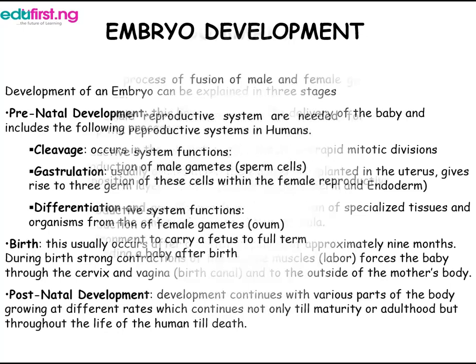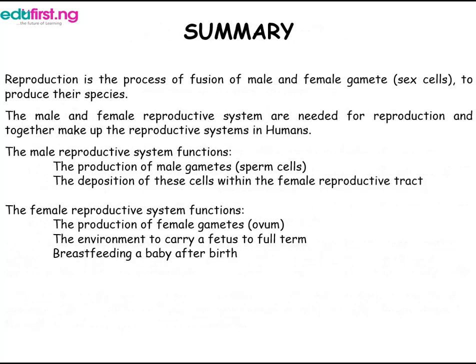In summary, reproduction is the process of fusion of male and female gamete sex cells to produce their species. The male reproductive system functions include the production of sperm cells and the deposition of these cells within the female reproductive tract. The female reproductive system functions include the production of female gametes (ovum), providing the environment to carry a fetus to full term, and breastfeeding the baby after birth.